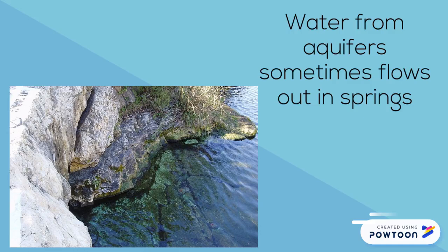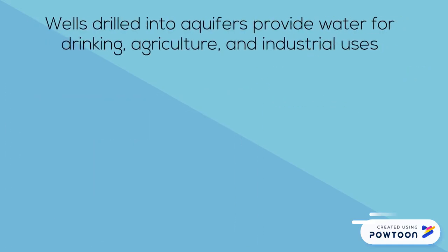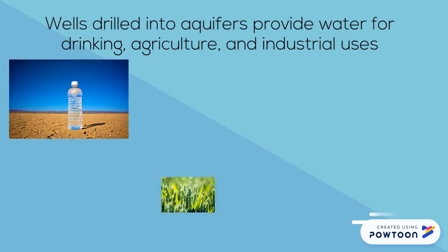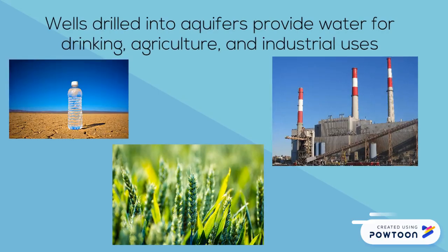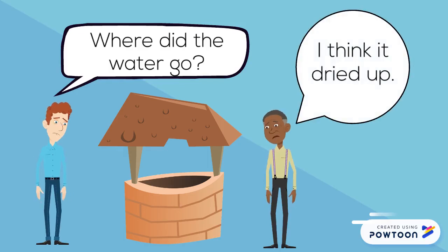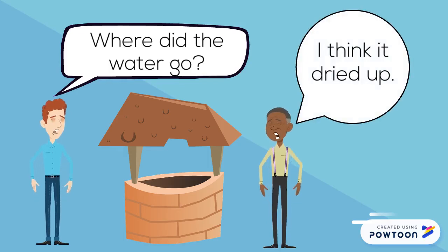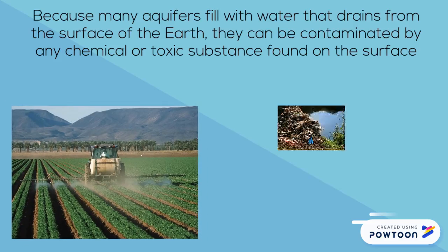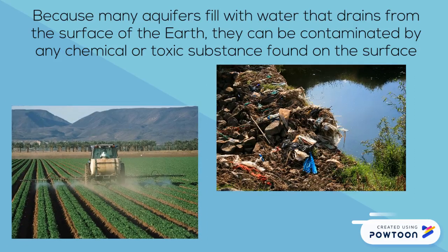Water from aquifers sometimes flow out in springs. Wells drilled into aquifers provide water for drinking, agriculture, and industrial uses. Aquifers, though, can dry up when people drain them faster than nature can refill them. Because many aquifers fill with water that drains from the surface of the earth, they can be contaminated by any chemical or toxic substance found on the surface.